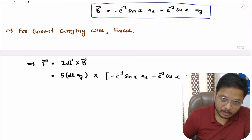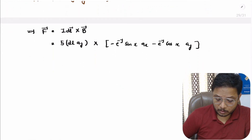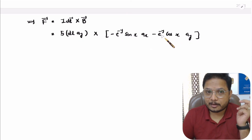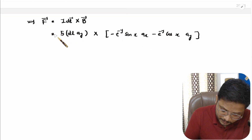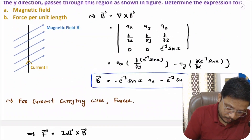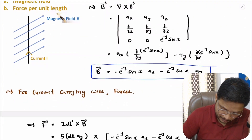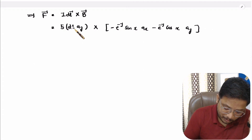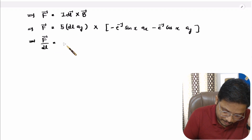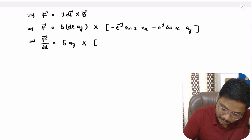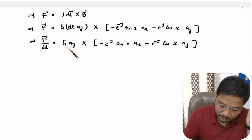We need the force per unit length, so we take dl to the other side. We then have 5 â_y crossed with the magnetic field components — performing the cross multiplication now.